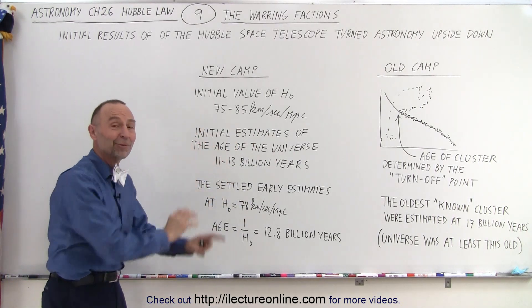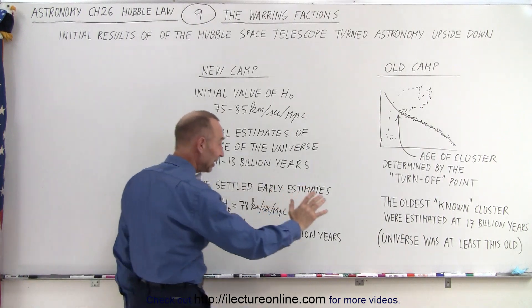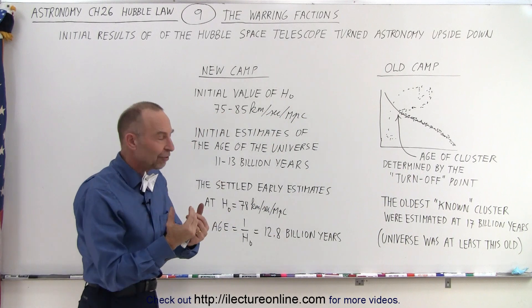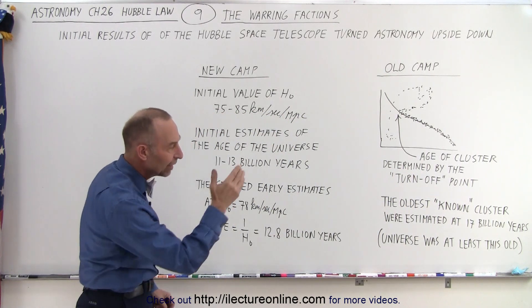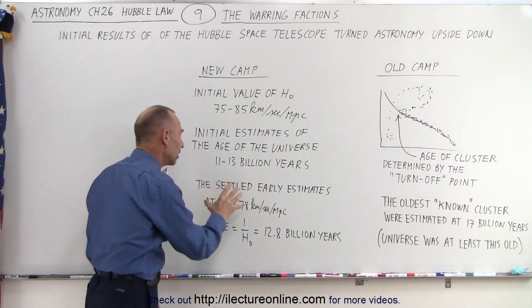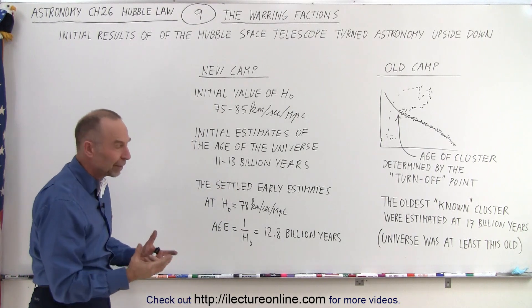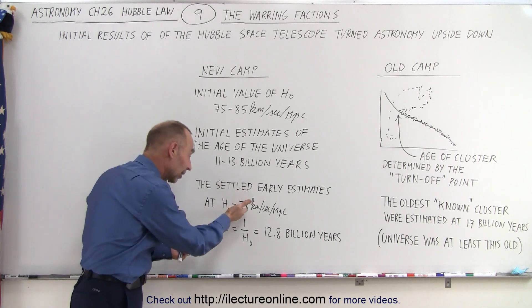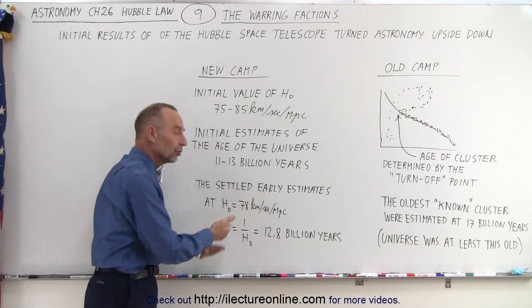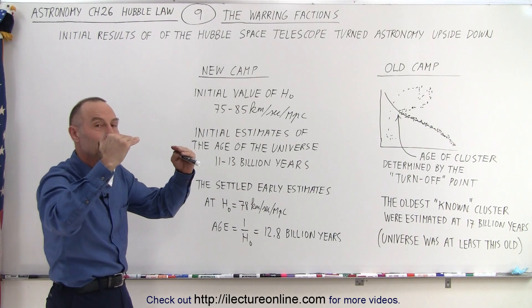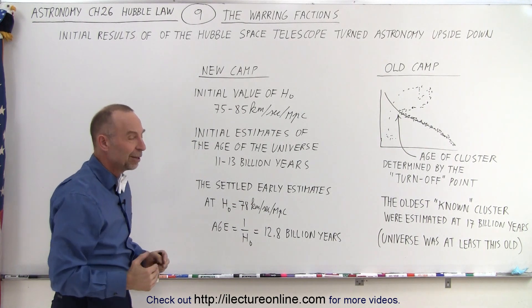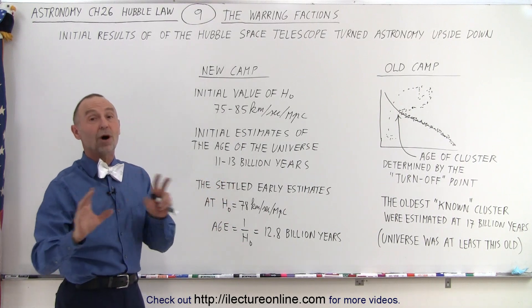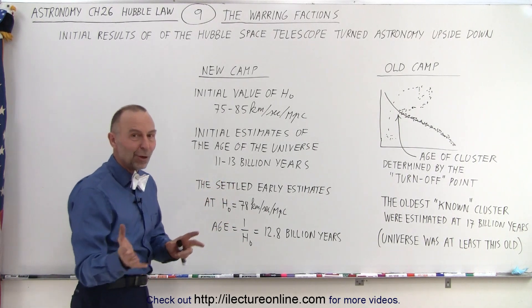In the end, it turned out that both camps were wrong. The globular cluster ages were not calculated correctly, and after more reviewing and studying, those numbers started to come down. After they reviewed the Hubble results as well, they realized they were a little bit off, and the Hubble constant started coming down while the age of the universe started going up. The two camps began to converge more and more over the years, though at the very beginning both of them were simply wrong based on what we know today.